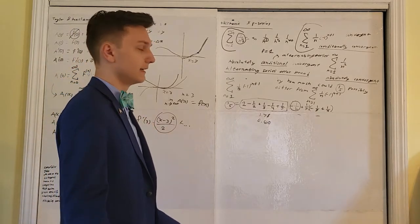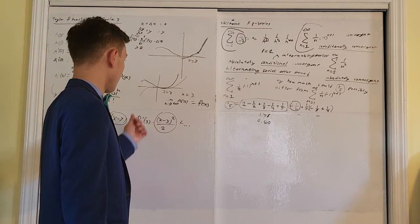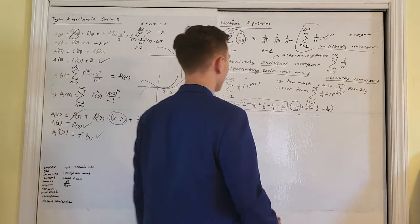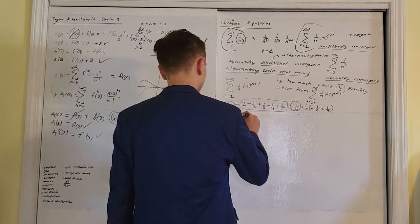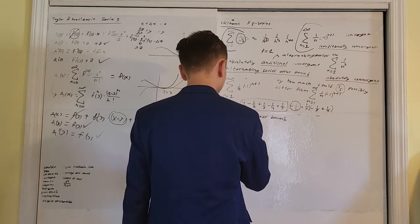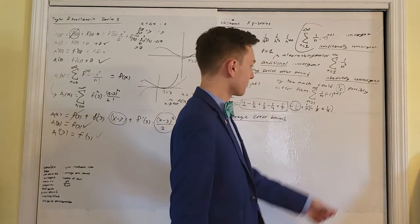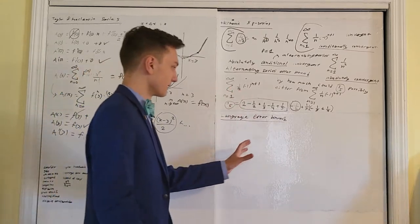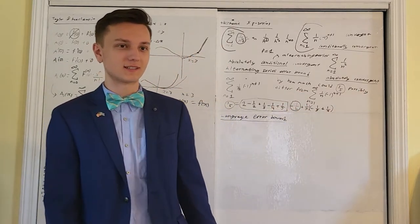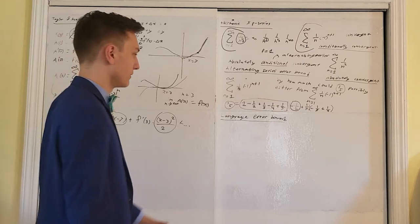So if we're only given a finite number of derivatives, how do we go about finding the error between our approximation and our actual function? This next topic is called Lagrange error bound. In my opinion, it's my favorite part of series, but many students stress over it because you need to memorize a lengthy and complex equation for your FRQ response. But once you memorize that, it's really simple from that point on — it's just basic algebra.